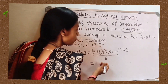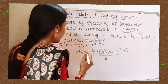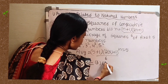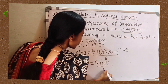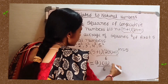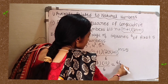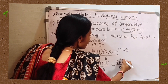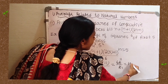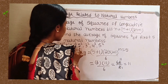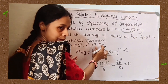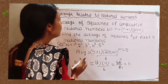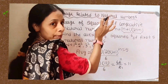Simplifying: 5 plus 1 is 6, two times 5 is 10, and 10 plus 1 is 11. So we get 6 times 11, which is 66, divided by 6, which equals 11. Therefore, 11 is the average of 1², 2², 3², 4², 5². This way we can easily find the average of consecutive square numbers.